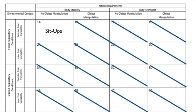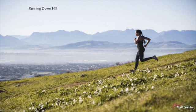Let's do another one. Let's imagine that we're watching someone live running down a hill, just as this young lady is doing. Take a second and pause the video here to see if you can determine how to classify this skill using Gentile's Multidimensional Taxonomy.